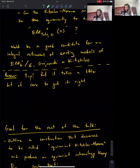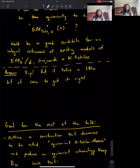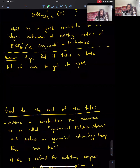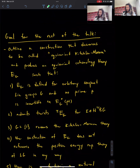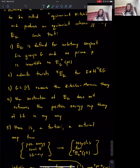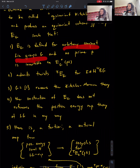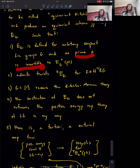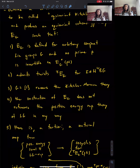So the goal for the rest of the talk: I will outline a construction that deserves to be called the equivariant Kischlu-Morava construction, and it will produce an equivariant cohomology theory. The first feature is that this equivariant cohomology theory EG will be defined for an arbitrary compact group. Moreover, its coefficient ring—the G-equivariant cohomology of a point—will be such that no prime is invertible in that ring. That's basically saying I'm doing things integrally, not tensoring with the complex numbers or the rationals.